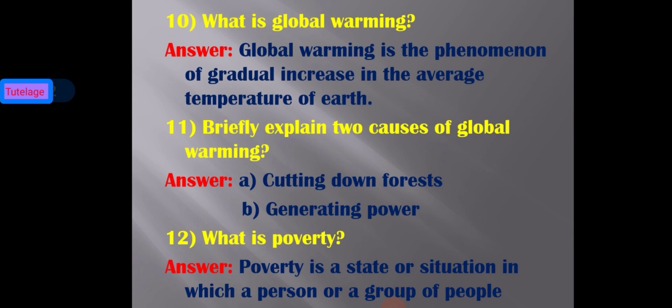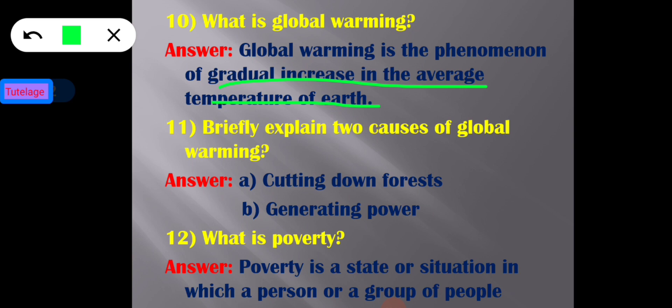The tenth question is: what is global warming? Global warming is basically a phenomenon which indicates the gradual increase in the average temperature of the Earth. It occurs when CO2 and other air pollutants collect in the atmosphere and absorb sunlight and solar radiation that have bounced off the Earth's surface, causing the average temperature to increase. That phenomenon is called global warming. Question 11 is closely related — briefly explain two causes of global warming.